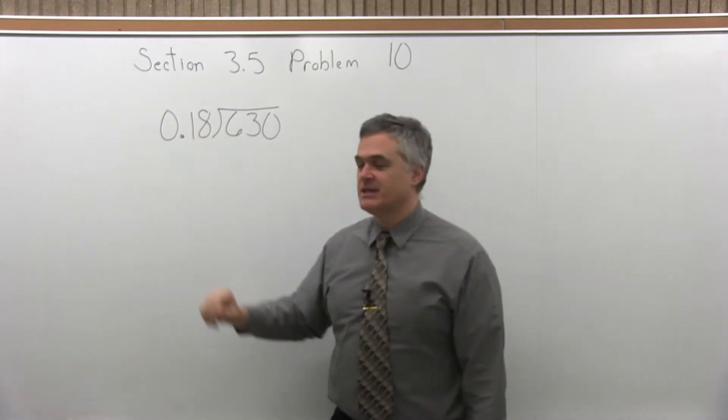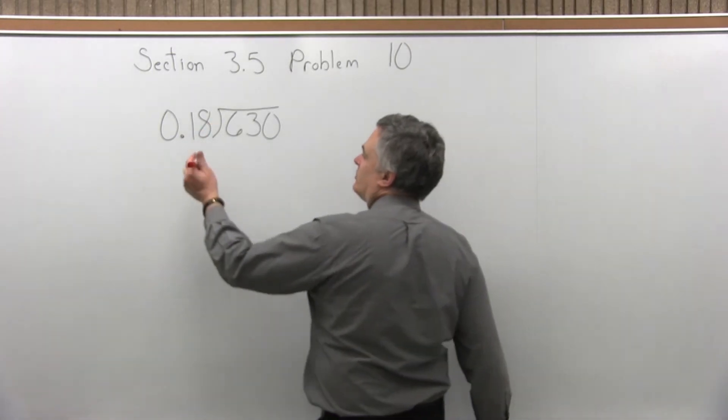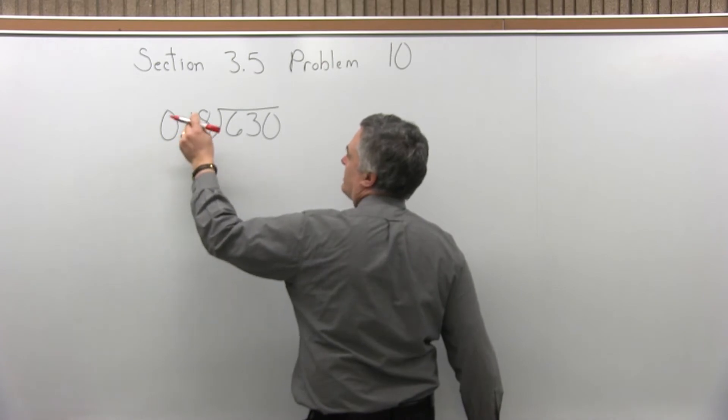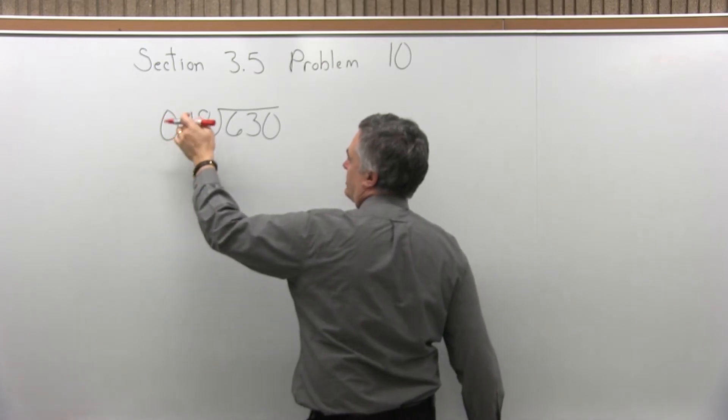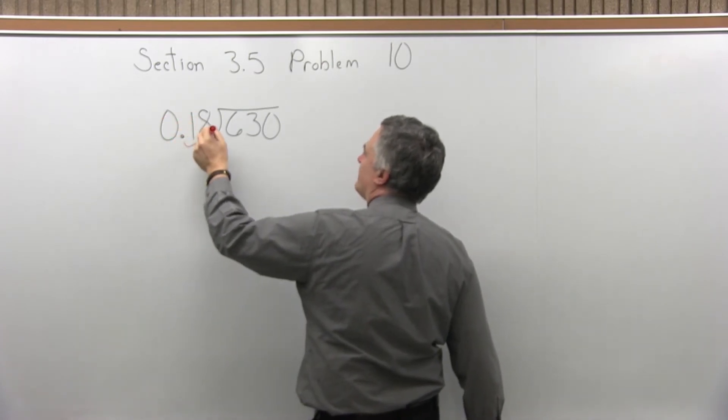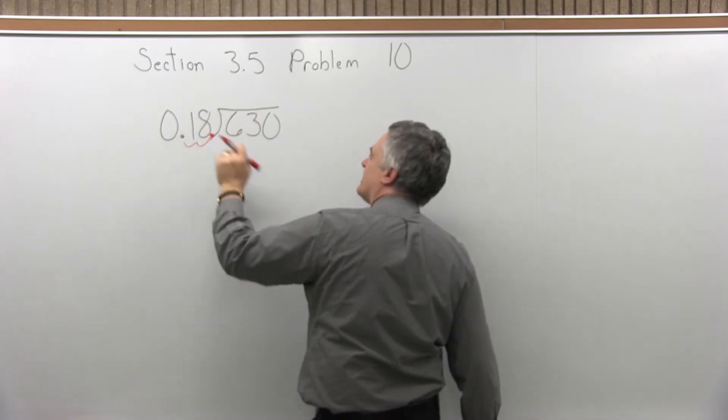We have to rewrite this so that I don't have a decimal in front. The rule is move the decimal for the number in front of the division symbol, or divisor, as many places as you have to, until it winds up at the far right. So in other words, after the 8.